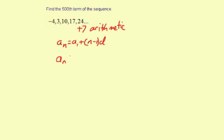Let's substitute what we know. a_n equals a_1, the first term, which is negative 4, plus (n-1) times d, the common difference, which is 7. That's what we're adding each time.